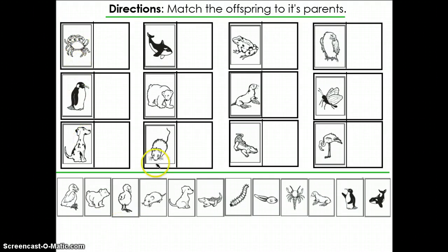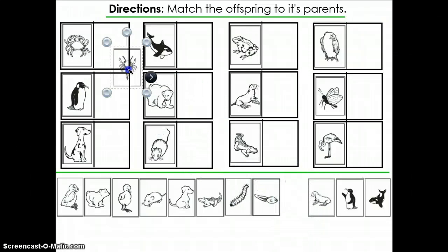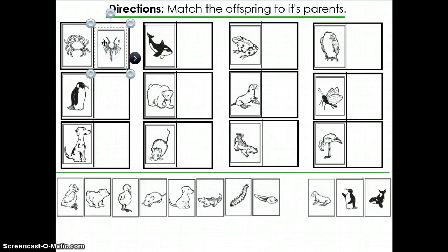Looking at the top, this is a crab and we can see that the offspring is a little bit different, but we can still see those pinchers right here. So that's a characteristic that tells us that those are the same.